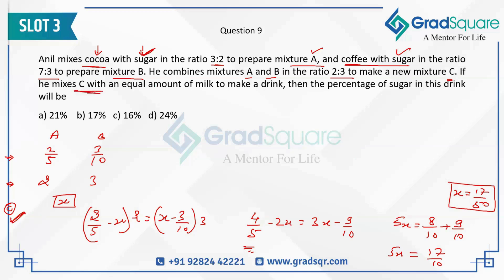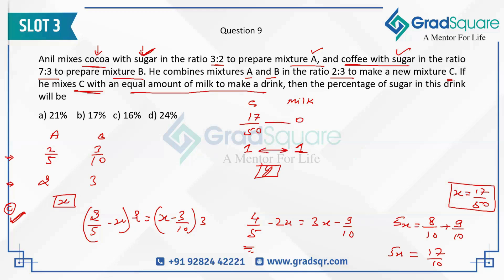Now the question says: if you mix C with an equal amount of milk, mixture C has a sugar strength of 17/50. Milk has zero sugar in it, and you are mixing equal quantities of C and milk, so the ratio is 1:1. To find the final strength of sugar Y, we set up the equation: (17/50 − Y) × 1 = (Y − 0) × 1.